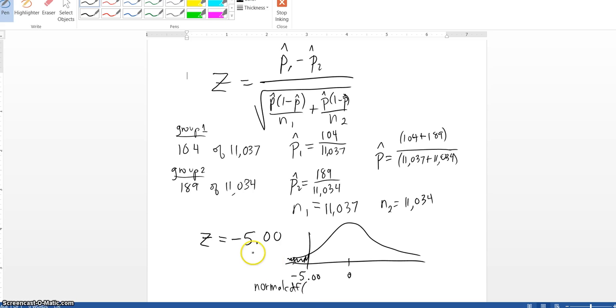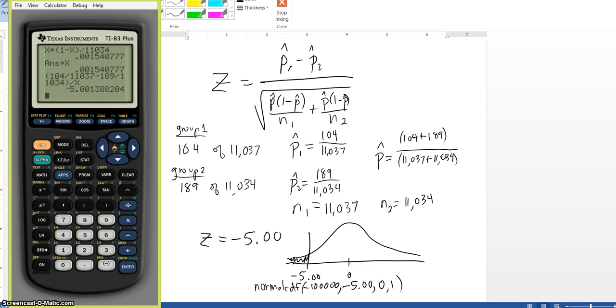I'm going to go from the negative infinity value up to my test statistic of negative 5.00. And this has a standard normal, so 0, 1. So, second distribution, go to my normal CDF. I'm going to go from the negative 100,000, negative 5.001.